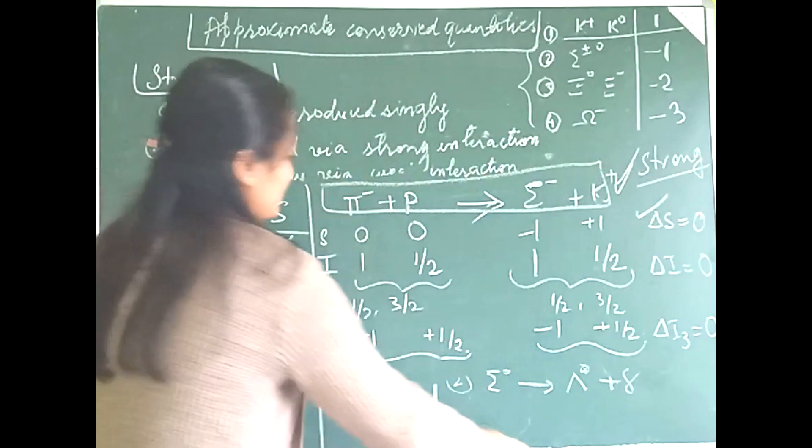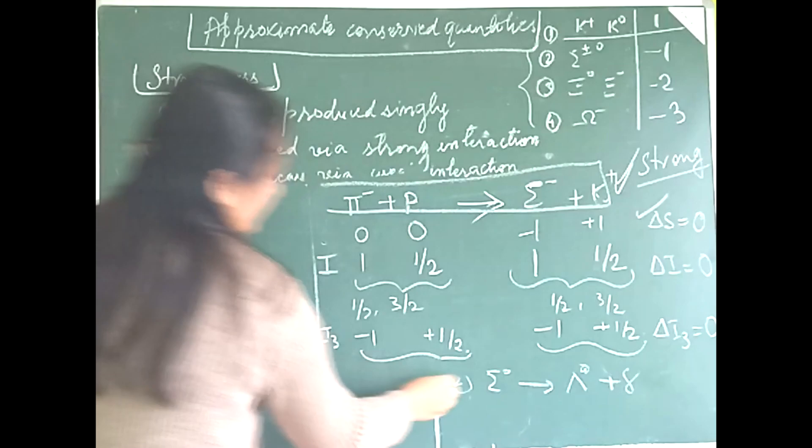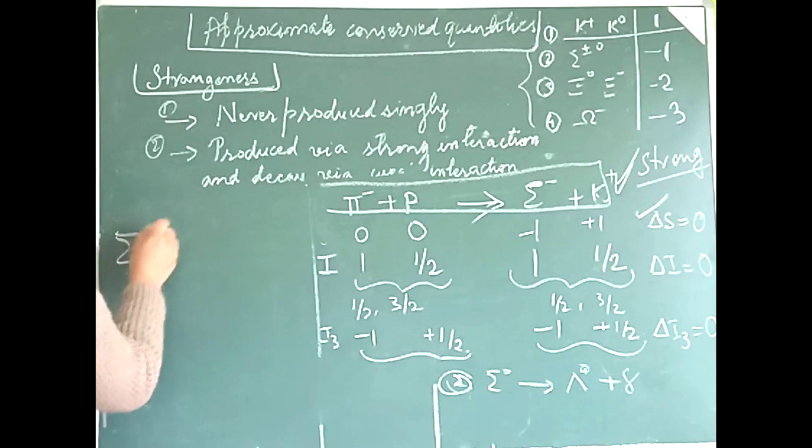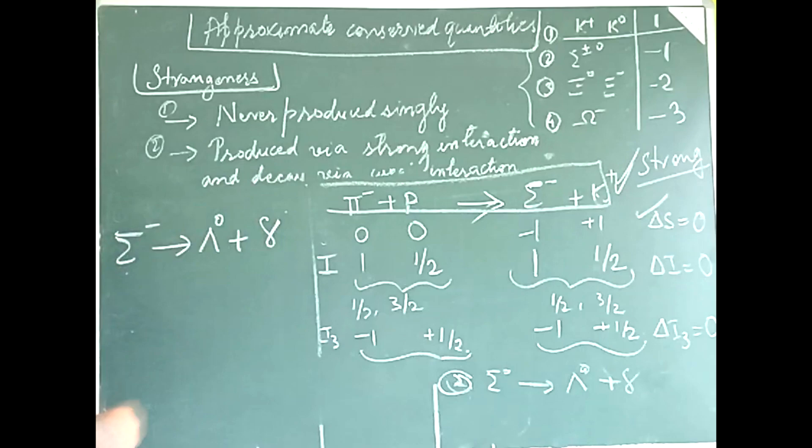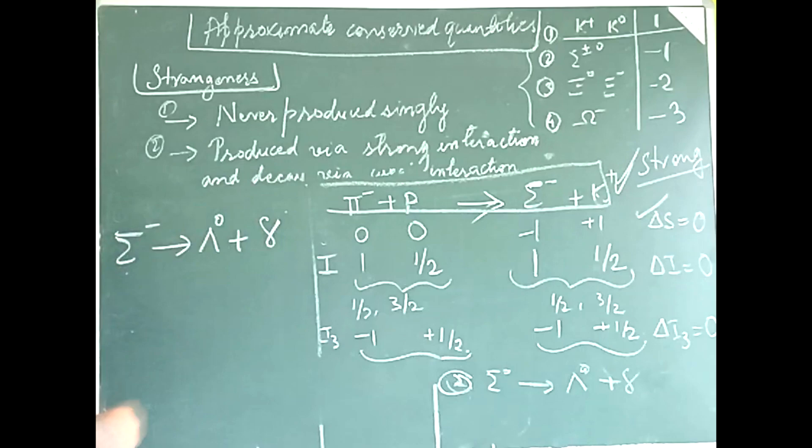As a home assignment, check the second reaction: sigma minus → lambda zero + gamma. Check S, I, and I₃, then identify which type of interaction this is.